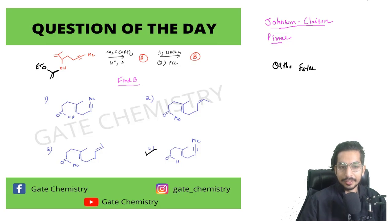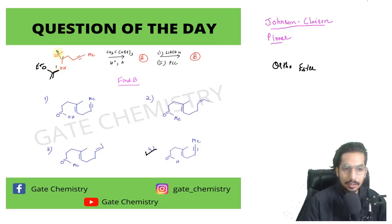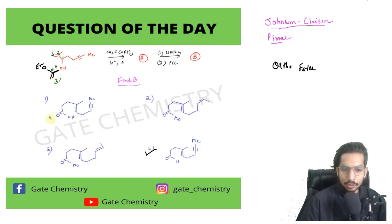This intermediate is formed in the first step. Now, when you heat it, there is a possibility of a 3,3-sigmatropic reaction — the Johnson-Claisen rearrangement — since oxygen is involved. You can label this carbon as 1, then 2 and 3, and 2-dash and 3-dash. All four answer structures drawn are actually the same; try it out yourself to gain confidence.